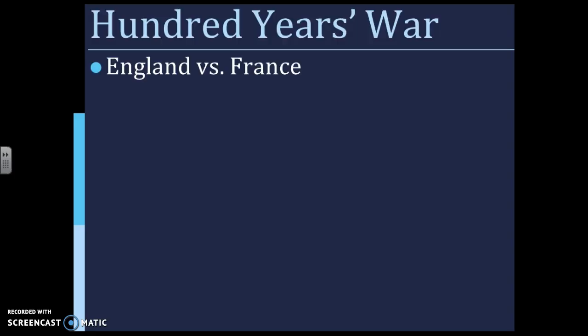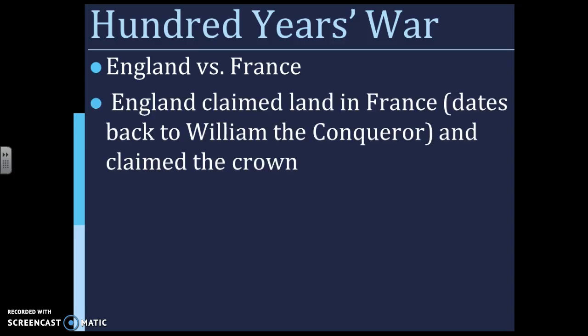The Hundred Years' War was predominantly between England and France, and it goes back to the issue of who owns France. The kings of England claimed land in France because William the Conqueror was actually a French duke — he owned Normandy in northern France. When the French king died without a son, England claimed the French crown.